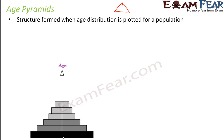If we take age on the y-axis, this is how the pyramid looks. As the age is increasing, the pyramid is becoming smaller because the number of individuals in the population is reducing. There can be different patterns of age pyramids, and these patterns tell us a lot about population change — whether the population increases or decreases, and how it is growing.